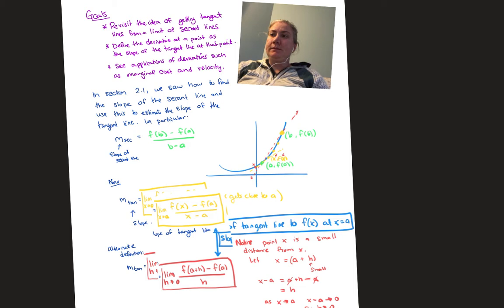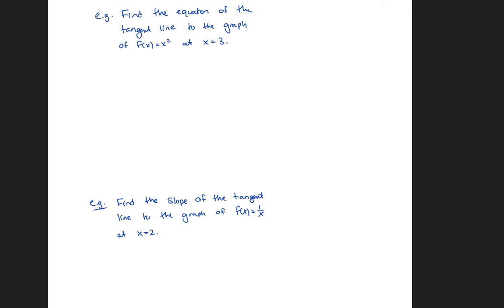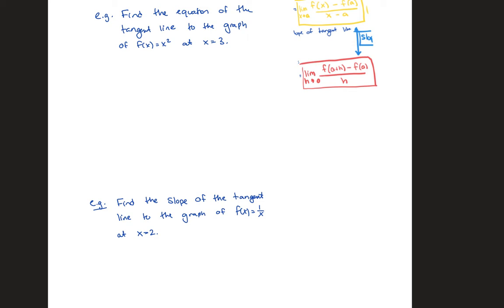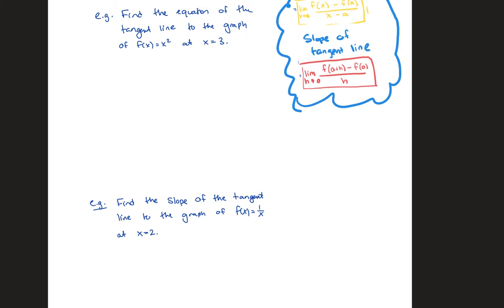Both of these definitions give us the slope of the tangent line. Now, this question asks us to find the equation of the tangent line to the graph of x squared at x equals 3. To find the equation of a line, we need a point on that line and the slope of that line.